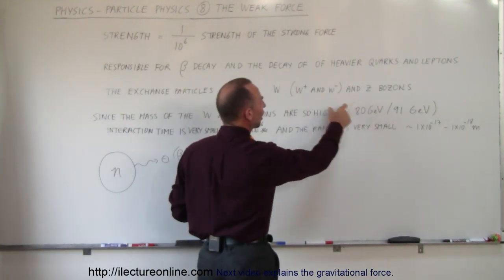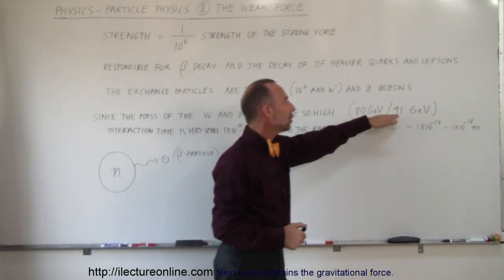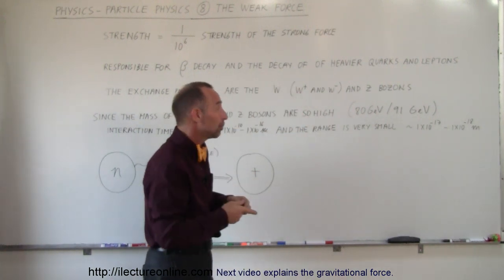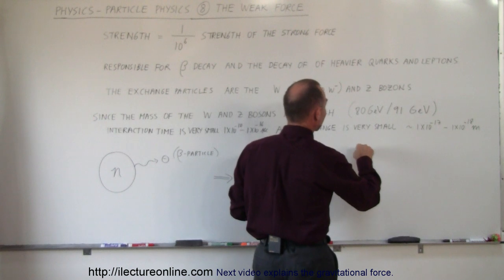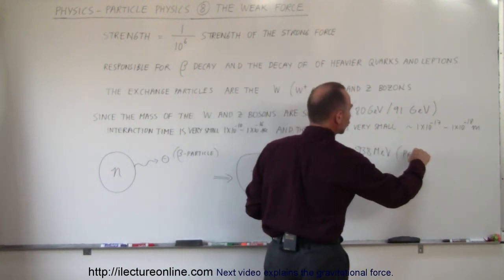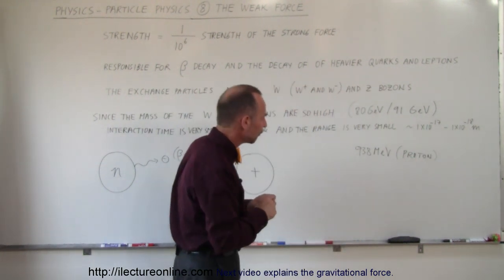The W bosons are 80 gigaelectron volts and the Z bosons are 91 gigaelectron volts in mass. Now to compare that to the proton, a proton is about 938 megaelectron volts for a proton or a neutron, a neutron is 939 megaelectron volts.